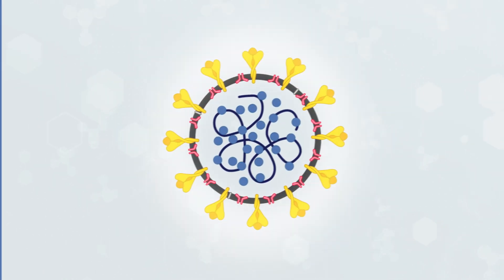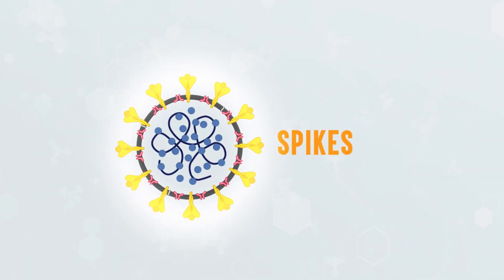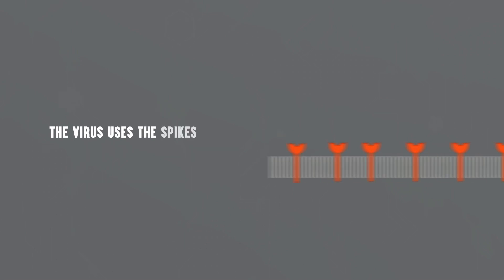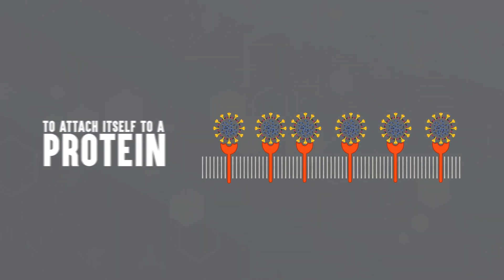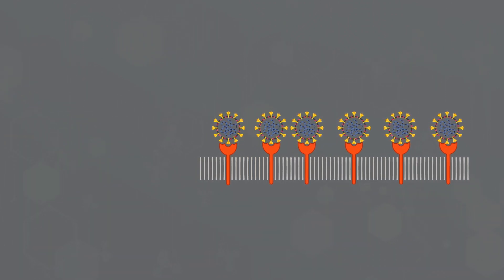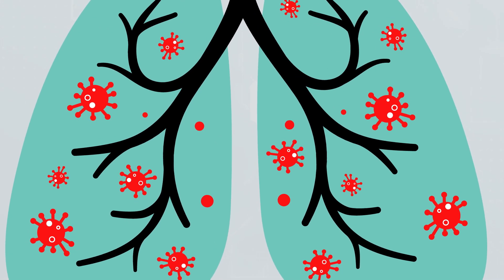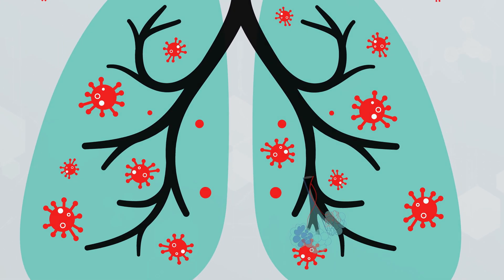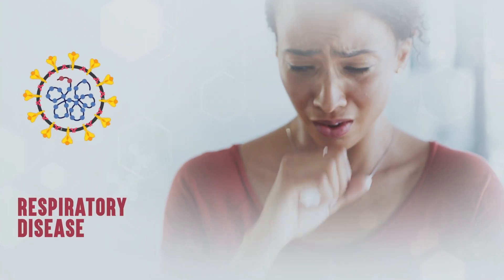Coronaviruses get their name from the corona, or crown-like spikes on the outer surface of the virus. The virus uses these spikes to attach itself to a protein on the host cell called the ACE2 receptor, just like a key and lock system. ACE2 receptors are present on cells throughout the body, but most are in the alveoli in the lungs, so a coronavirus mainly causes respiratory disease.